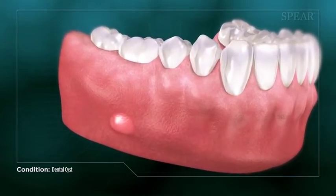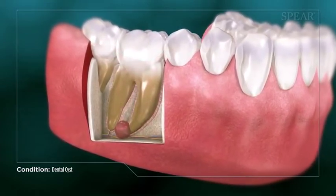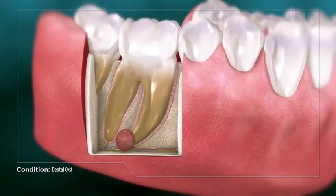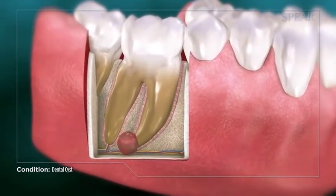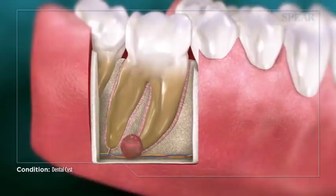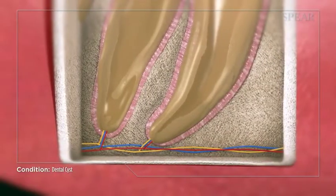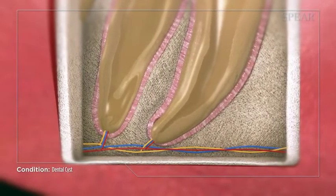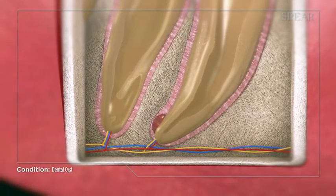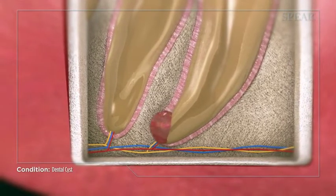The formation of dental cysts can have many potential causes, including infection, trauma, or the improper development of a tooth. When a cyst initially forms, it is usually small, with potentially no infection present, often causing no pain.